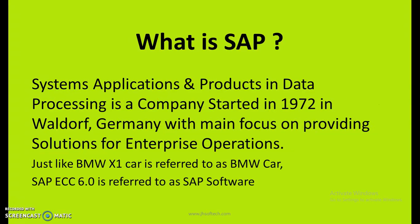What is SAP? SAP stands for Systems, Applications and Products in Data Processing. It's a company started in 1972 in Waldorf, Germany, with main focus on providing solutions for enterprise operations. When we say SAP is a company, we also refer to SAP when talking about the software — similar to BMW, which is both a company name and a brand name. SAP softwares are normally just called SAP rather than referring to specific versions.